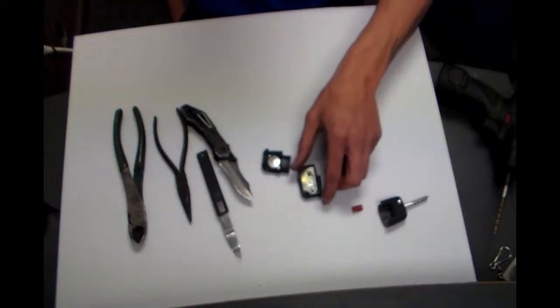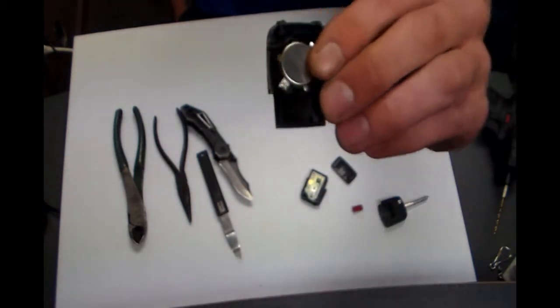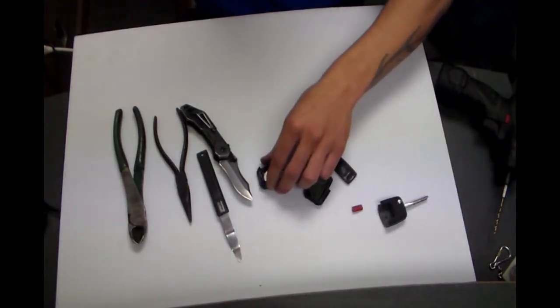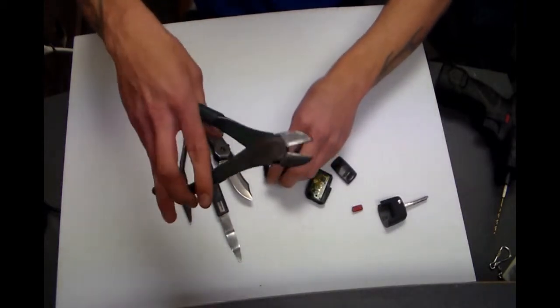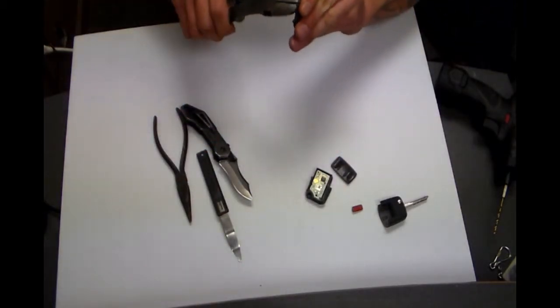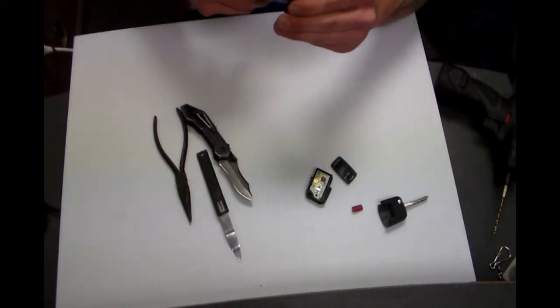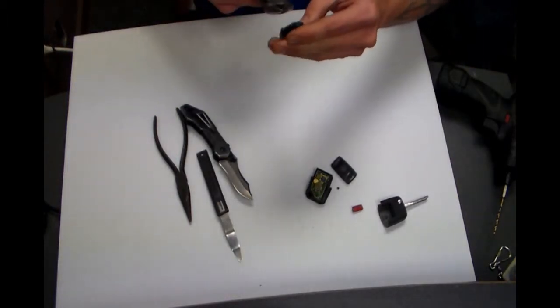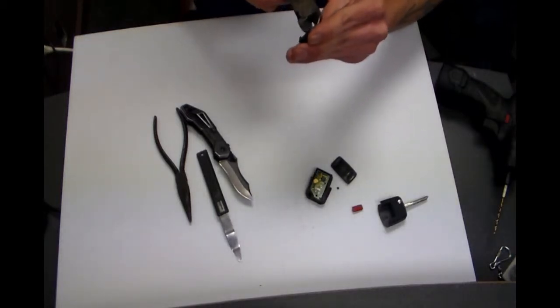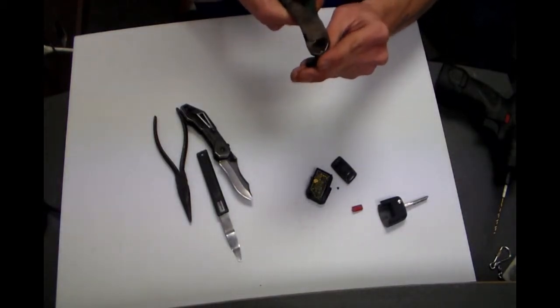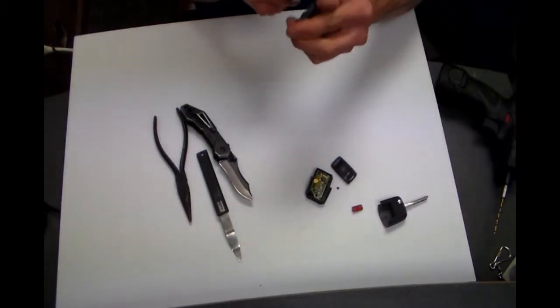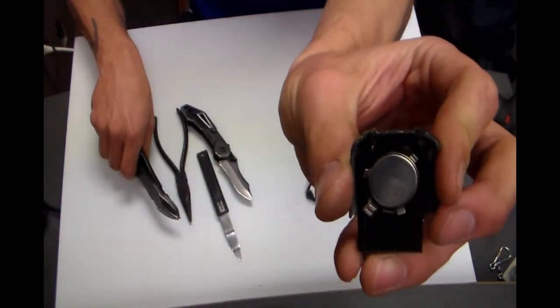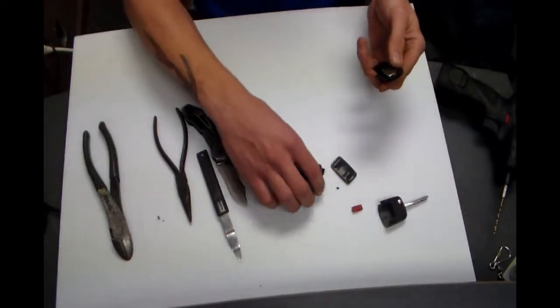Now what we want to do is we want to remove the little metal piece that sits in there. I have a pair of side cutters and you kind of have to work at it. That metal piece will come out and it will leave you with a nice little opening.